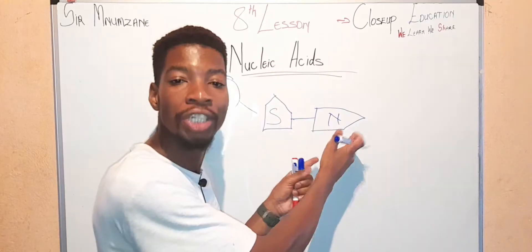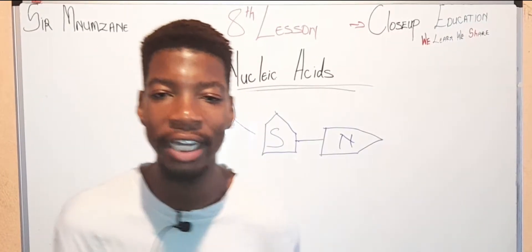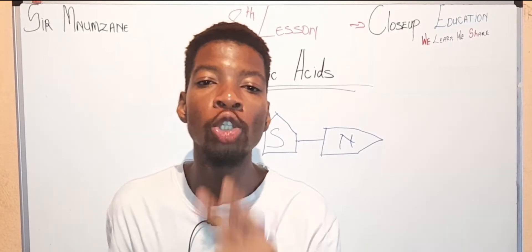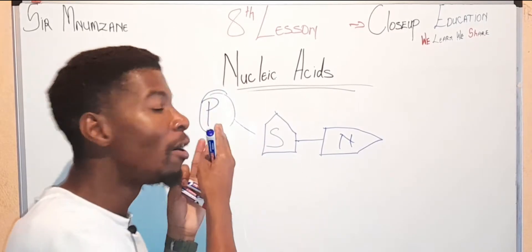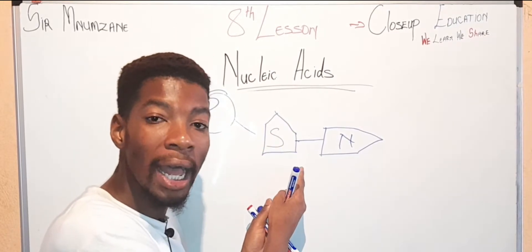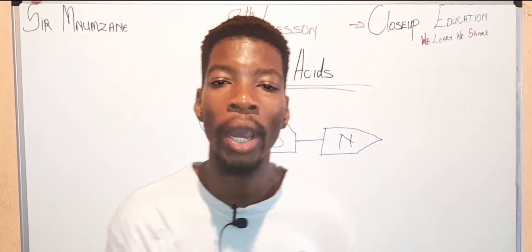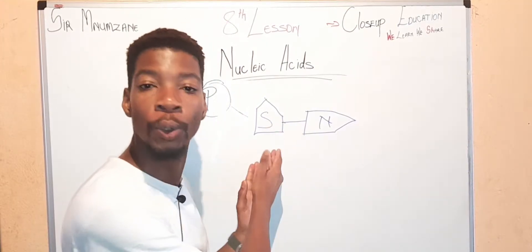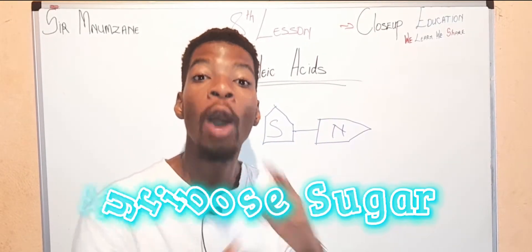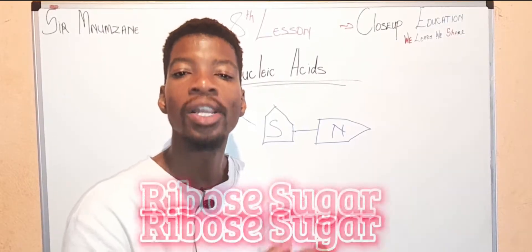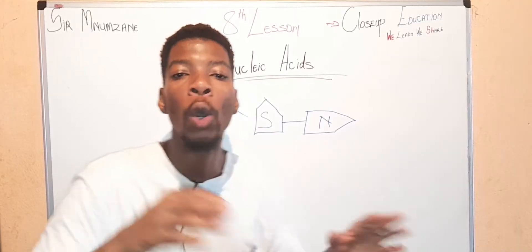Do DNA and RNA consist of the very same phosphate group, sugar, and nitrogenous bases? The answer is no, because they do not consist of the very same sugar. DNA consists of the deoxyribose sugar, while RNA consists of the ribose sugar.